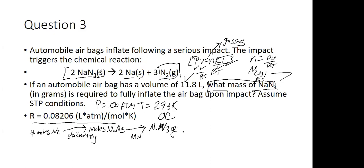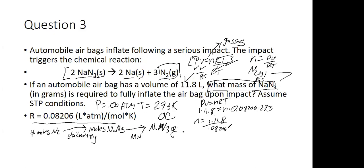Let's put some numbers to this. PV = nRT: P is 1 atmosphere, volume is 11.8 liters, N we don't know, gas constant is 0.08206, temperature is 273. Rearranging: N = (1 × 11.8) / (0.08206 × 273). The number of moles of gas is 0.527 moles of N₂. That's the ideal gas law step done.